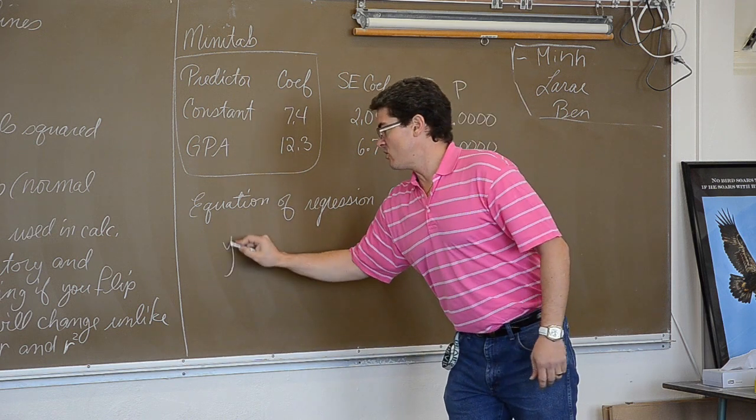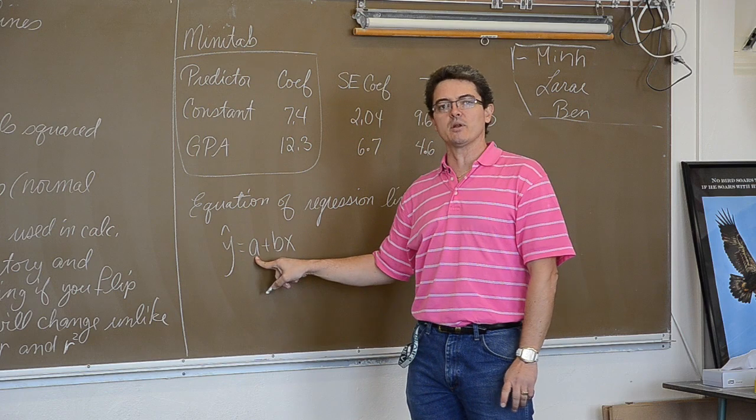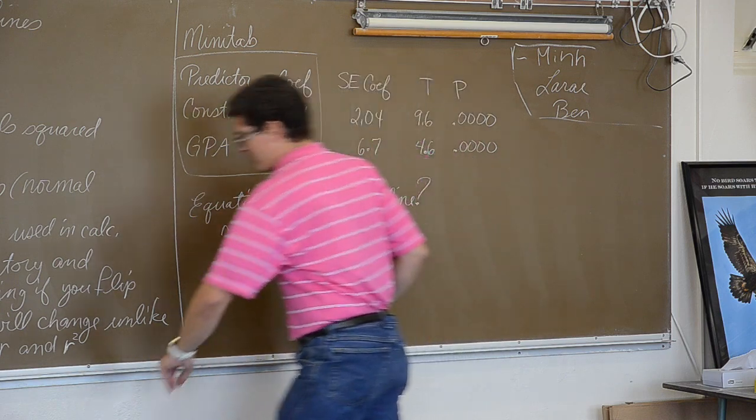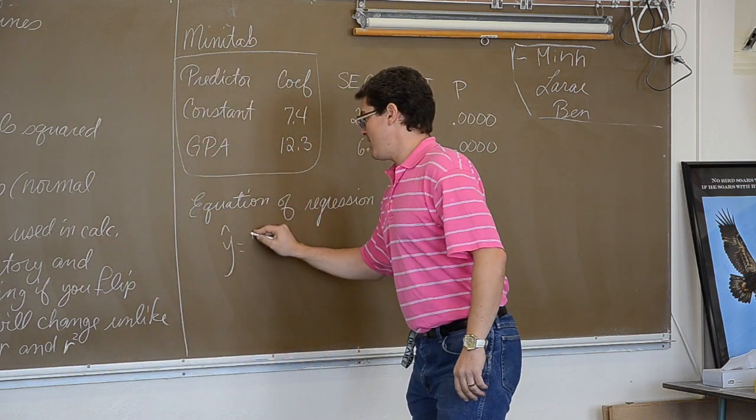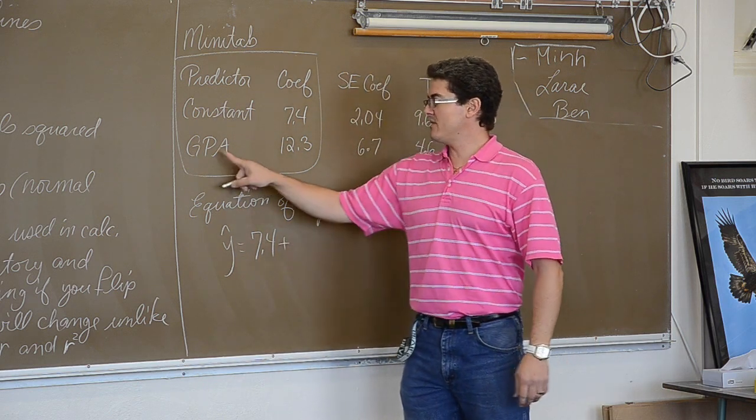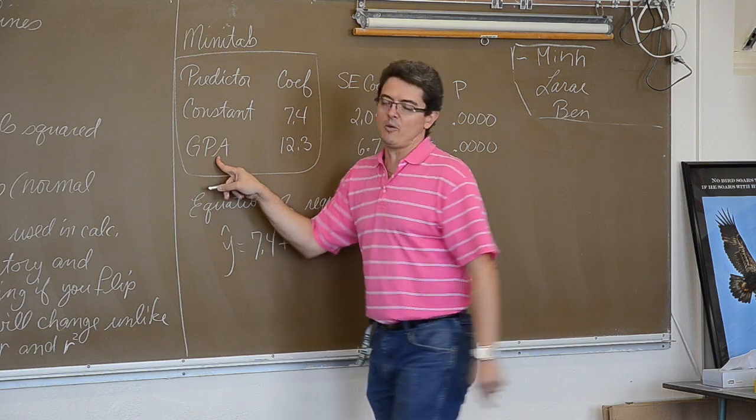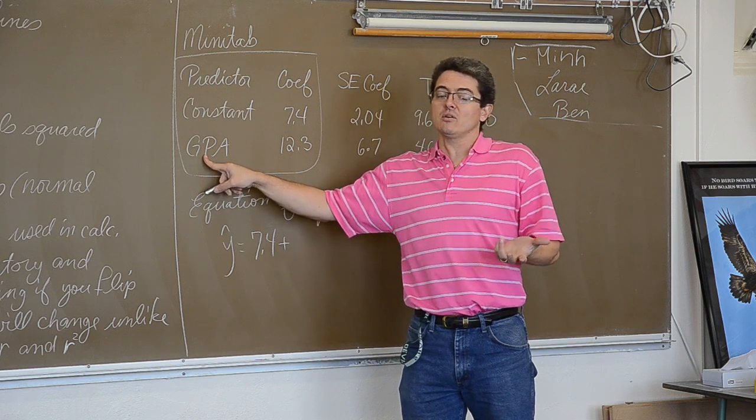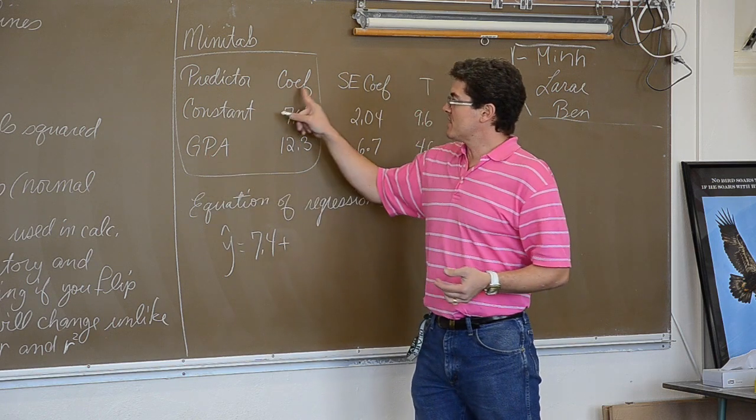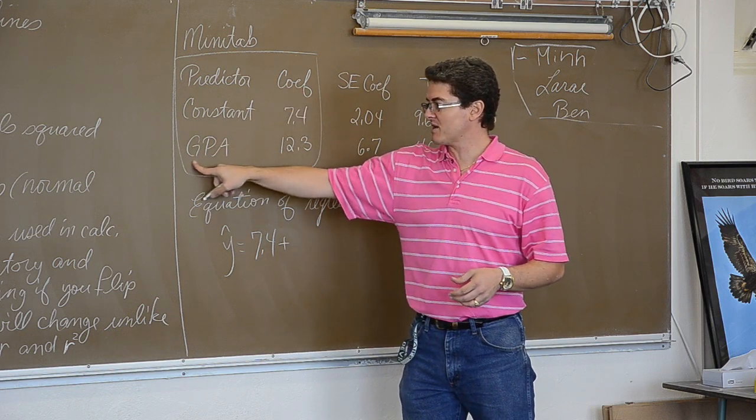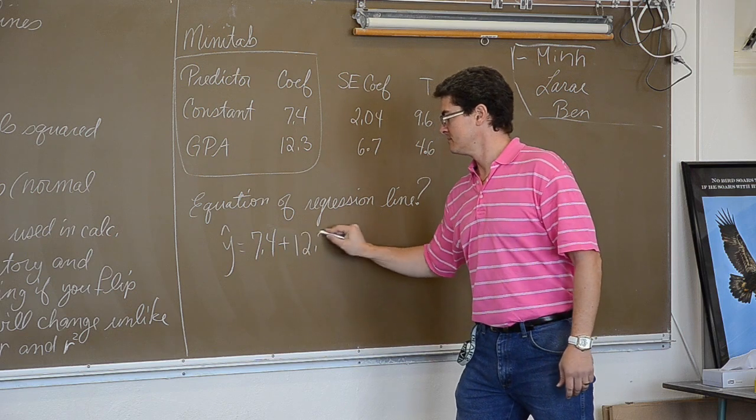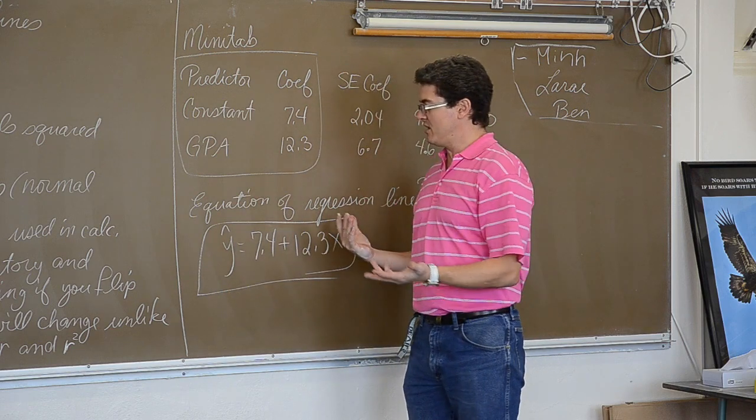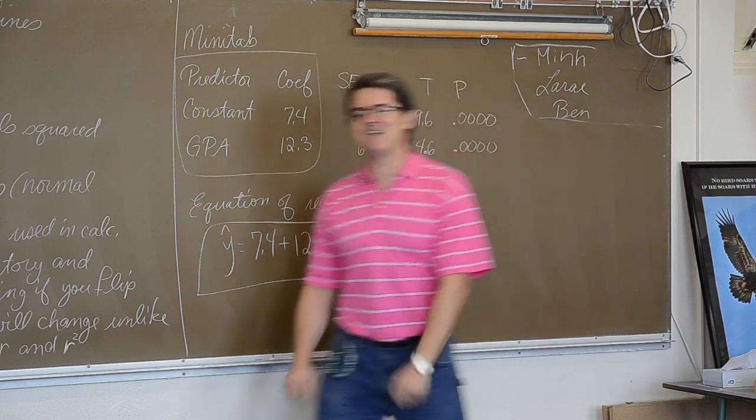Well, the regression equation is a plus bx. And what do we call a number when it is off by itself? A constant. Well, the coefficient of the constant is 7.4. So the a comes out and 7.4 comes in its place. And then the second number, or the second line of that mini-tab output will always be about what is on the x-axis. What is the coefficient of GPA? So, maybe we are using GPA to predict your SAT math scores. Well, the slope, or the coefficient of the x variable is 12.3. And bam! I just looked at some mini-tab output and from that wrote the equation of the regression line. I did finish! Woo! Bam! Have a great day!